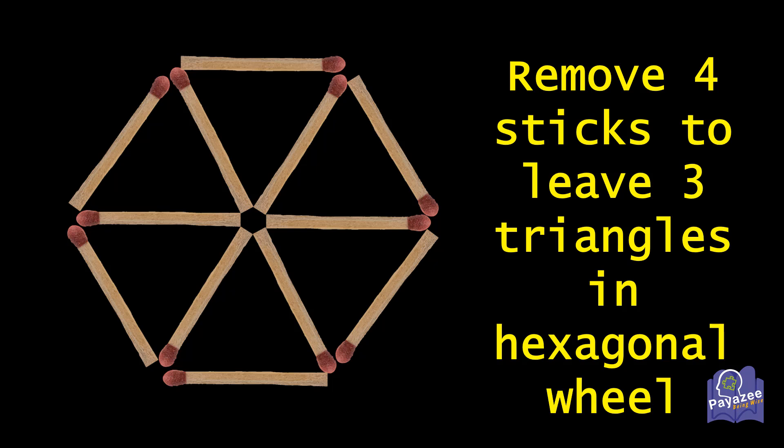So first we will mark which are the common sticks. In the middle, these are the common sticks in the hexagon: 1, 2, 3, 4, 5, 6. And if you look at this, we have 6 triangles in this hexagon structure.